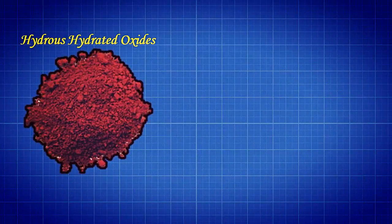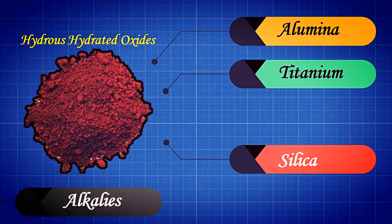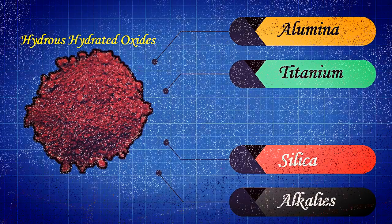Red mud mainly consists of hydrous hydrated oxides of alumina, titanium, silica, and alkalis.